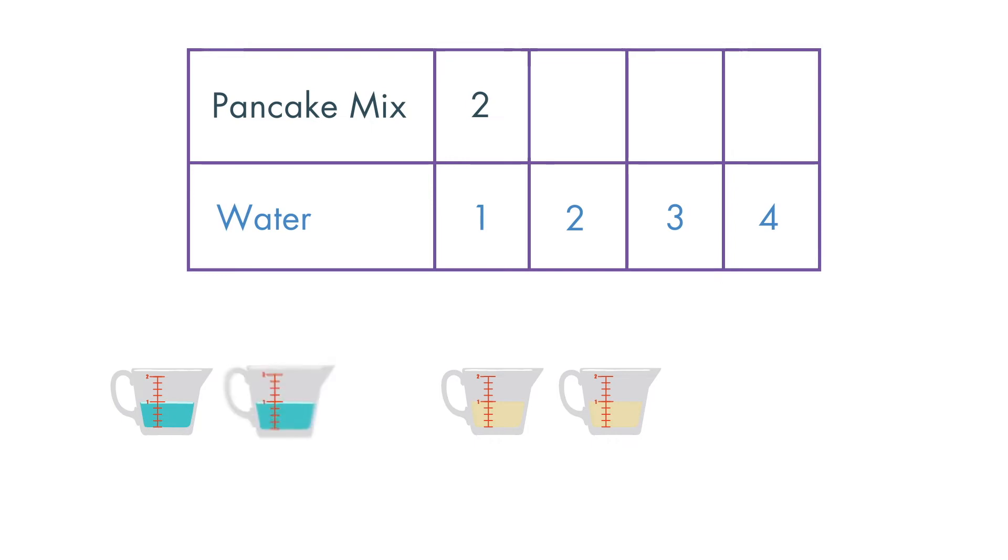So, for 2 cups of water, we will need to use 4 cups of pancake mix. Do you see the pattern of our ratio of 2 to 1?